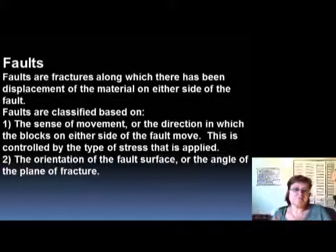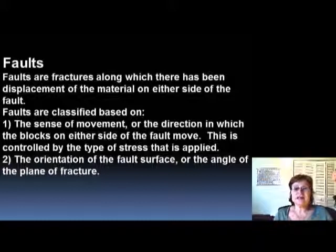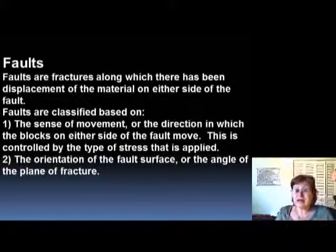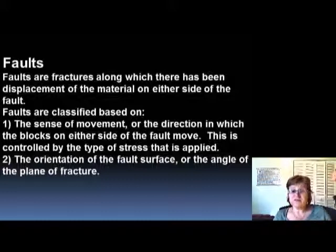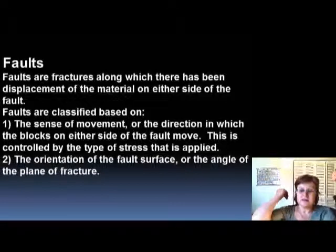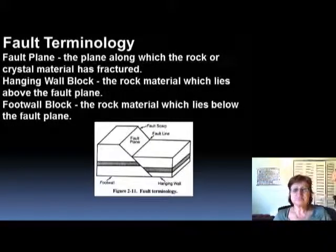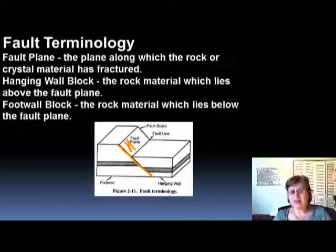Now we are at faults. Faults are fractures along which there has been movement or displacement. If you look at either side of the fault line, you will have different kinds of rocks. We classify faults based on the type of movement, which direction and how it moved, and the orientation of the fault surface and the angle of the fracture.